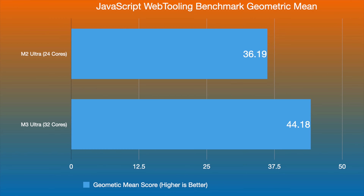Running the JavaScript Web Tooling Benchmark, the geometric mean shows a clear difference. The M2 Ultra with 24 cores scored 36.19, while the M3 Ultra with 32 cores scored 44.18. That's a meaningful lead for the M3 Ultra. Interestingly, the M4 Max is actually faster than the M3 Ultra on this benchmark, though I'm not showing it in this chart.